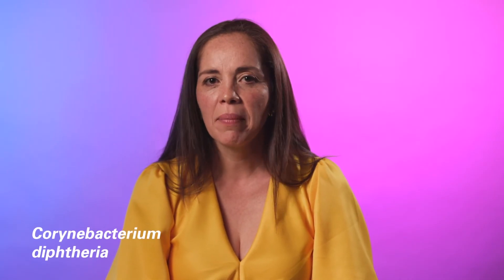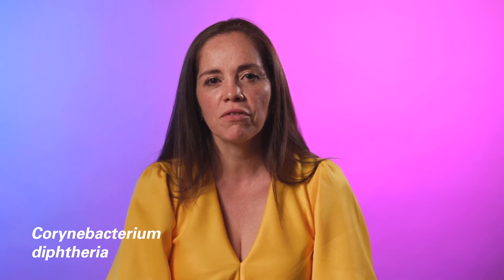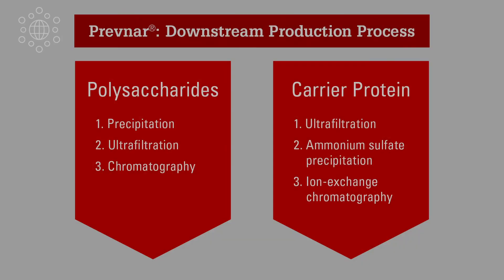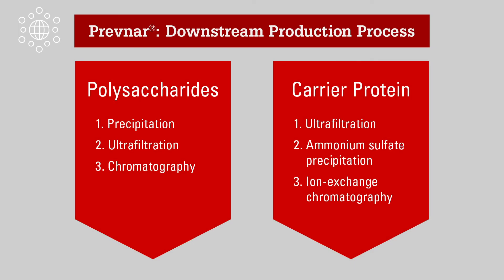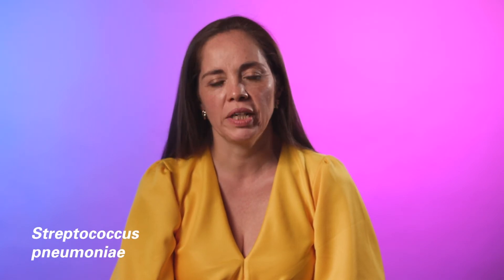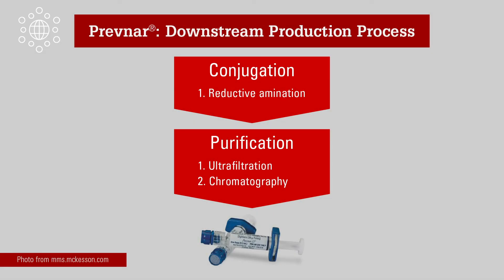A conjugated vaccine like Prevnar 13 requires running the production process 13 times — once for each individual component. The protein carrier is produced by growing Corynebacterium diphtheriae and extracting a non-toxic protein variant for later linking with the other components. The 13 polysaccharides used in Prevnar 13 are each grown individually using Streptococcus pneumoniae, purified using tangential flow filtration, precipitation, and chromatography, and then linked with the protein carrier using a chemical reaction. This process is time-consuming and expensive, but so far is the best vaccine for prevention of pneumococcal bacterial infections.